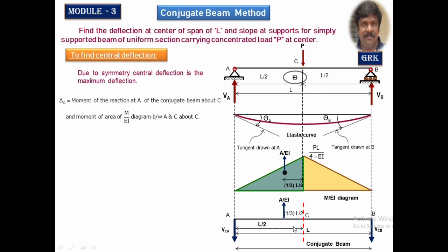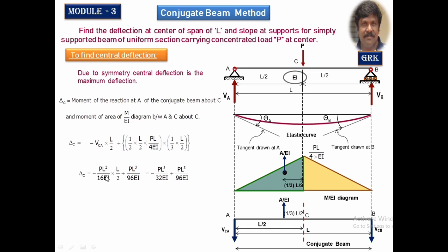The moment of reaction A is minus VCA into L by 2 — negative because downward force takes negative sign. Then the area of the M by EI diagram between A and C: base is L by 2, height is PL by 4EI, acting at a distance one-third of L by 2. This is the CG of the loading system. After substituting, taking LCM, and simplifying, the final deflection at the centre works out to PL³ by 48EI, or WL³ by 48EI. The minus sign indicates downward deflection.